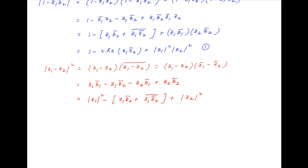Recalling that the sum of a complex number and its conjugate is equal to 2 times the real part of the complex number, the value of this expression is equal to the absolute value of z1 squared, minus 2 times the real part of z1 times the conjugate of z2, plus the absolute value of z2 squared. Let's call this Result 2.